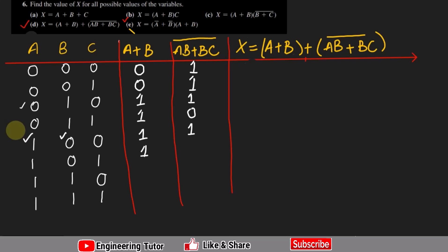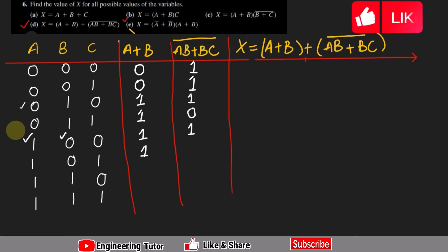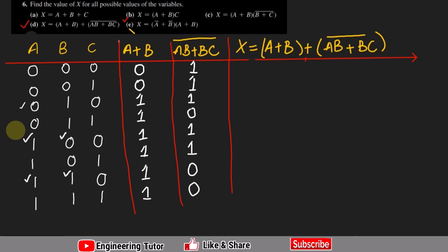Here 1 plus 0 is 1. ab: 1 times 0 is 0, 0 times 1 is 0 as well, so 0 plus 0 is 0 and complement is 1. Here a plus b is 1, ab is 1 because a is 1 and b is 1, and bc is 0, so 1 plus 0 is 1 and complement is 0. Here it will be 1, ab is 1, bc is 1, 1 plus 1 is 1, and complement is 0.